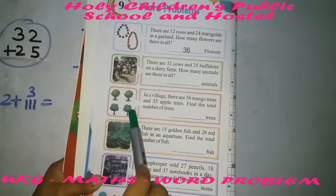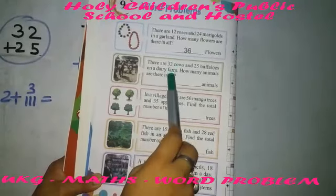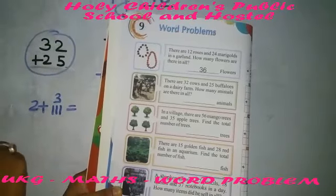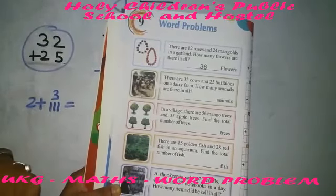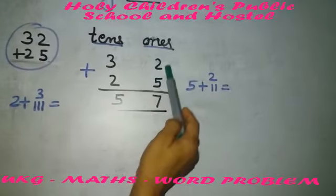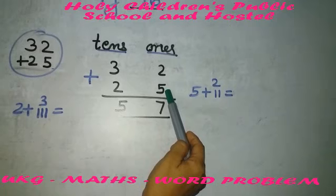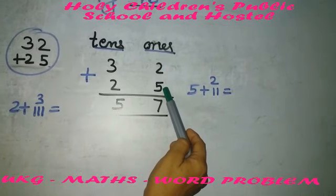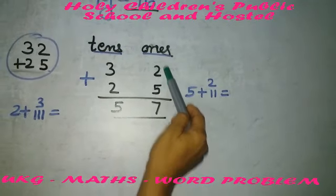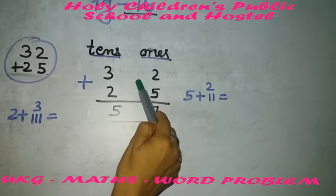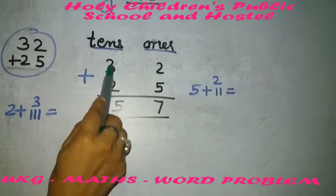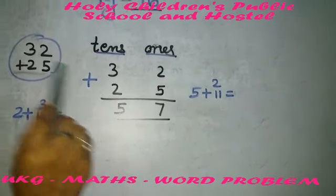You have to do the addition of the number 32 plus 25. Now how will you do it? First write the numbers 5 and 2 in the ones column, then 2 and 3 in the tens column.